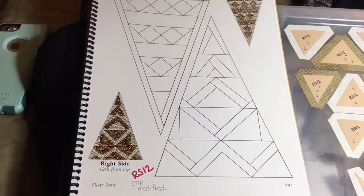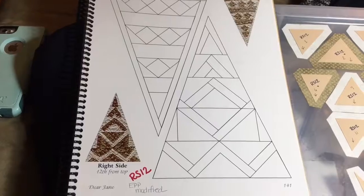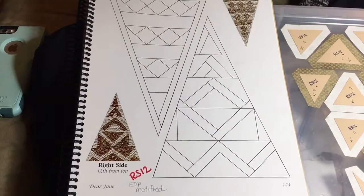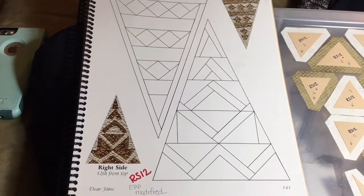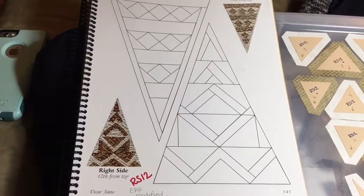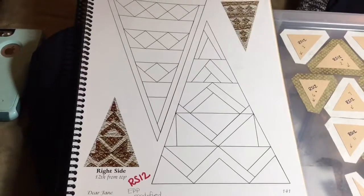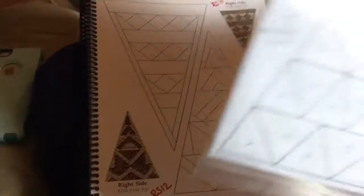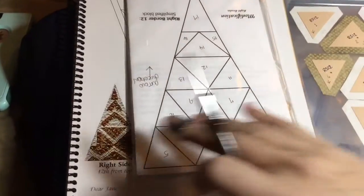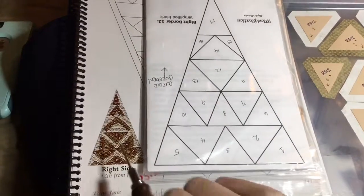Almost done with the right border. We're on the RS12 block, and this is a modified block in the book. It has been significantly modified. I had to verify that it was the right block, and indeed it is.